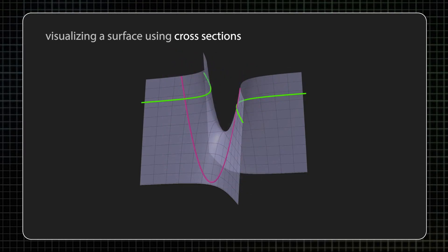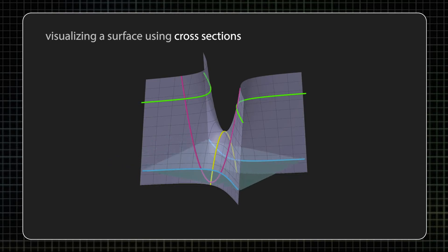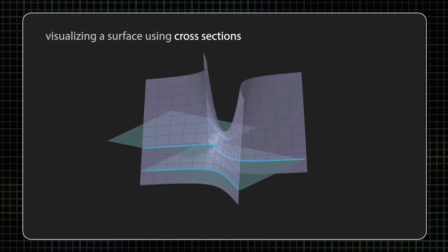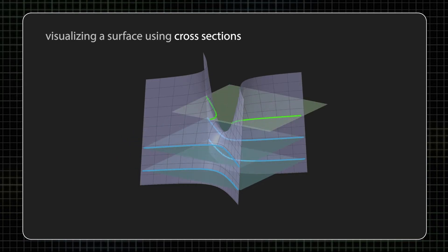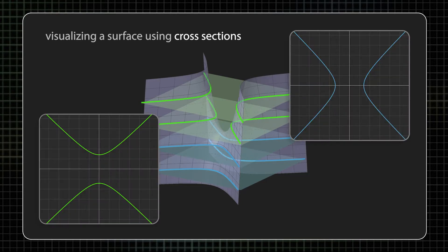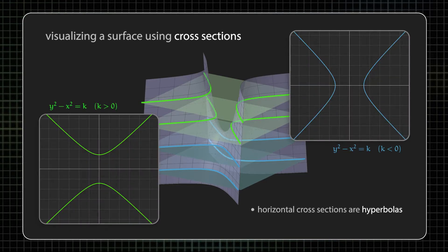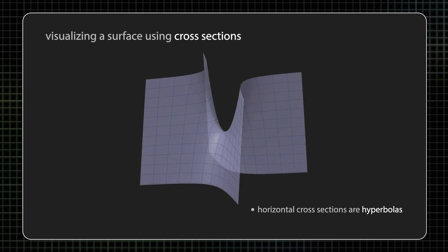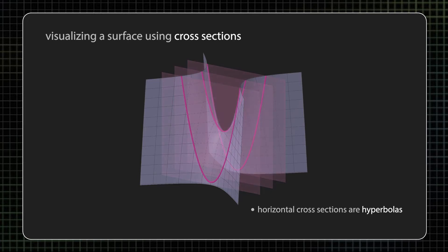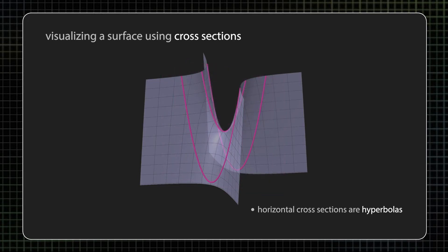By cross sections, I mean the curves you get if you intersect the surface with a plane. So if we intersect a hyperbolic paraboloid with horizontal planes, then the intersections are curves that look like this. These curves are hyperbolas. On the other hand, if we look at the intersection of our surface with vertical planes, then we get parabolas.